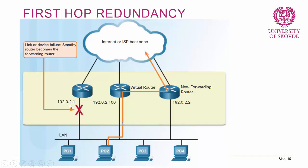The routers decide on their own who is in charge of forwarding traffic. For example, you can have one physical router and another physical router using a first hop redundancy protocol configured as one virtual router reachable at 192.0.2.100. Clients use that address as the default gateway. The active router handles forwarding, and if it fails, the standby router takes over.